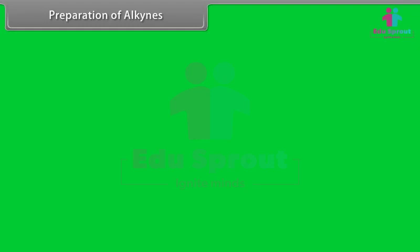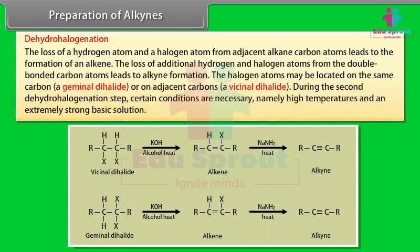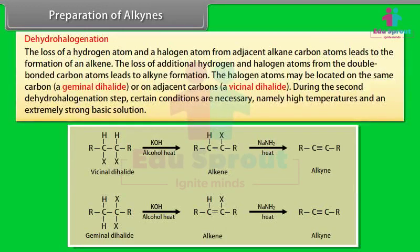Preparation of Alkynes: The preparations of alkynes are very similar to those of alkenes, involving elimination of groups or ions from molecules to form pi bonds. Dehydrohalogenation: the loss of a hydrogen atom and a halogen atom from adjacent alkene carbon atoms leads to alkene formation. Further loss of hydrogen and halogen atoms from the double-bonded carbons leads to alkyne formation. The halogen atoms may be on the same carbon (a geminal dihalide) or on adjacent carbons (a vicinal dihalide). The second dehydrohalogenation step requires high temperatures and an extremely strong basic solution.